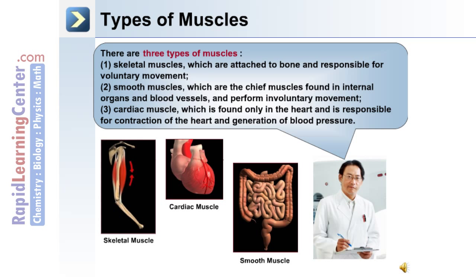There are three types of muscle in our body: skeletal muscle, smooth muscle, and cardiac muscle. Skeletal muscle is attached to bones and is responsible for voluntary movement. Smooth muscle is the chief muscle found in internal organs and blood vessels, and performs involuntary movement.